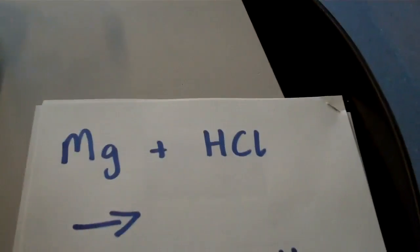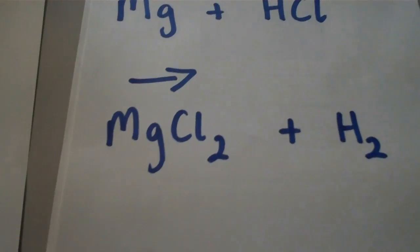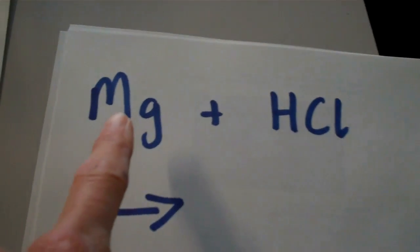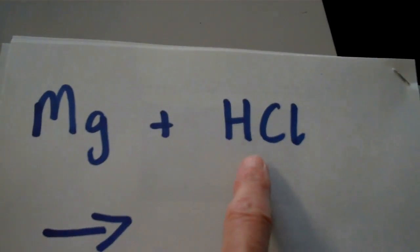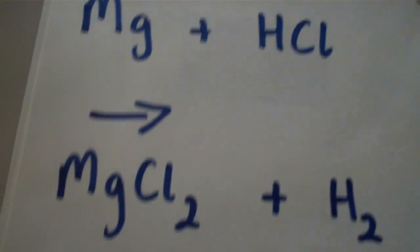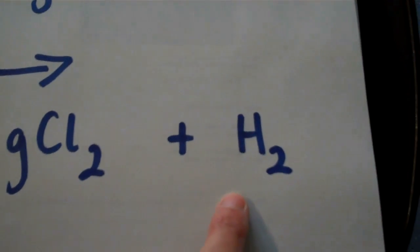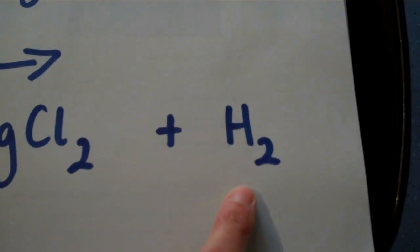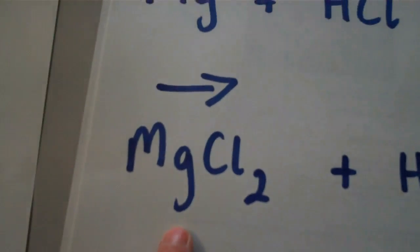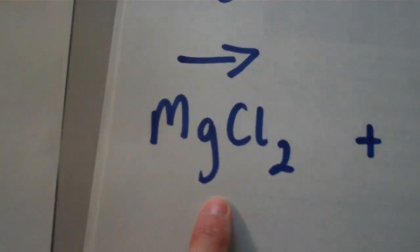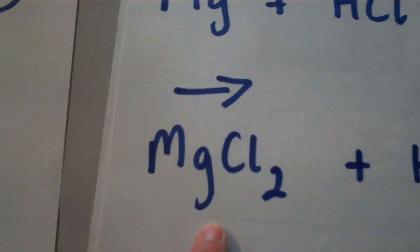If you look at the chemical equation, it tells us the reactants — what we start out with — magnesium and acid. The arrow then points to the products. The gas we see in the bubbles is hydrogen gas, and the magnesium is now combining with the two chlorines. This product, magnesium chloride, is dissolving in the water.